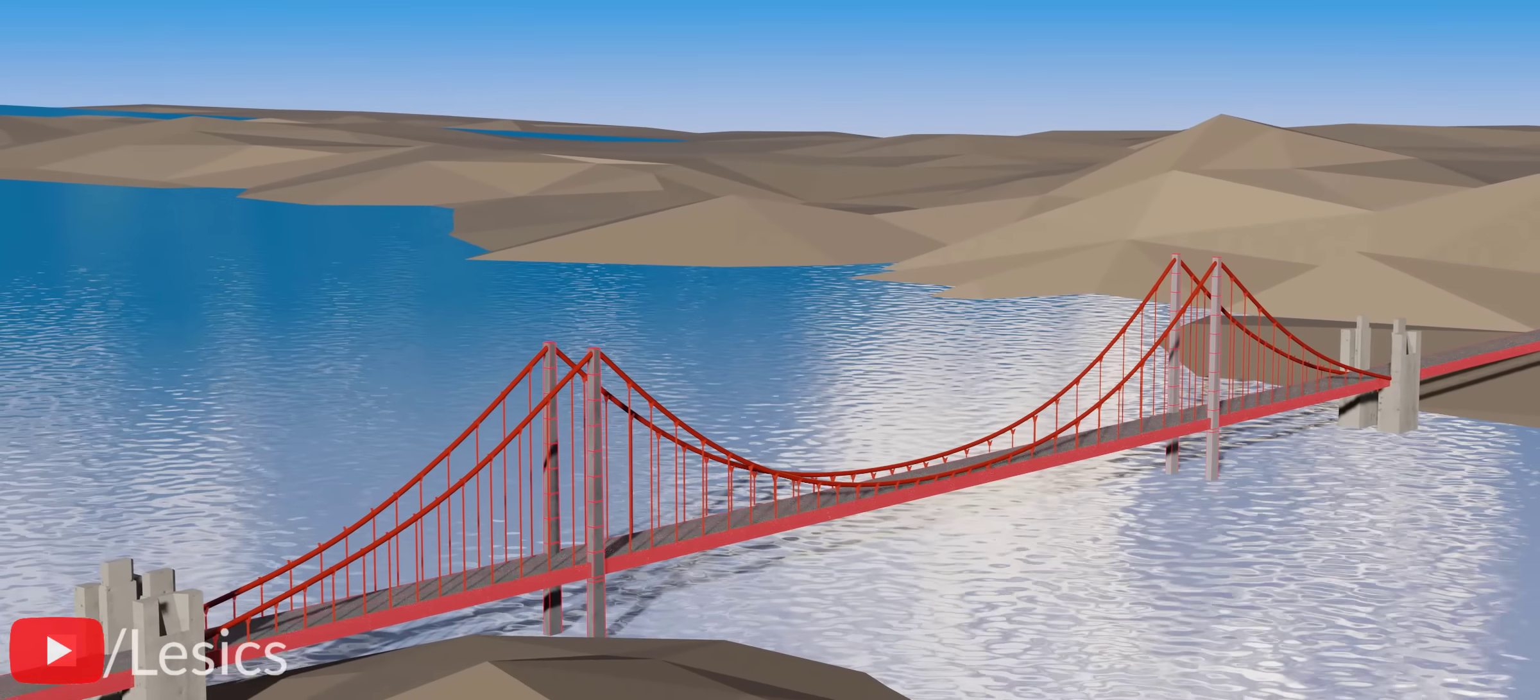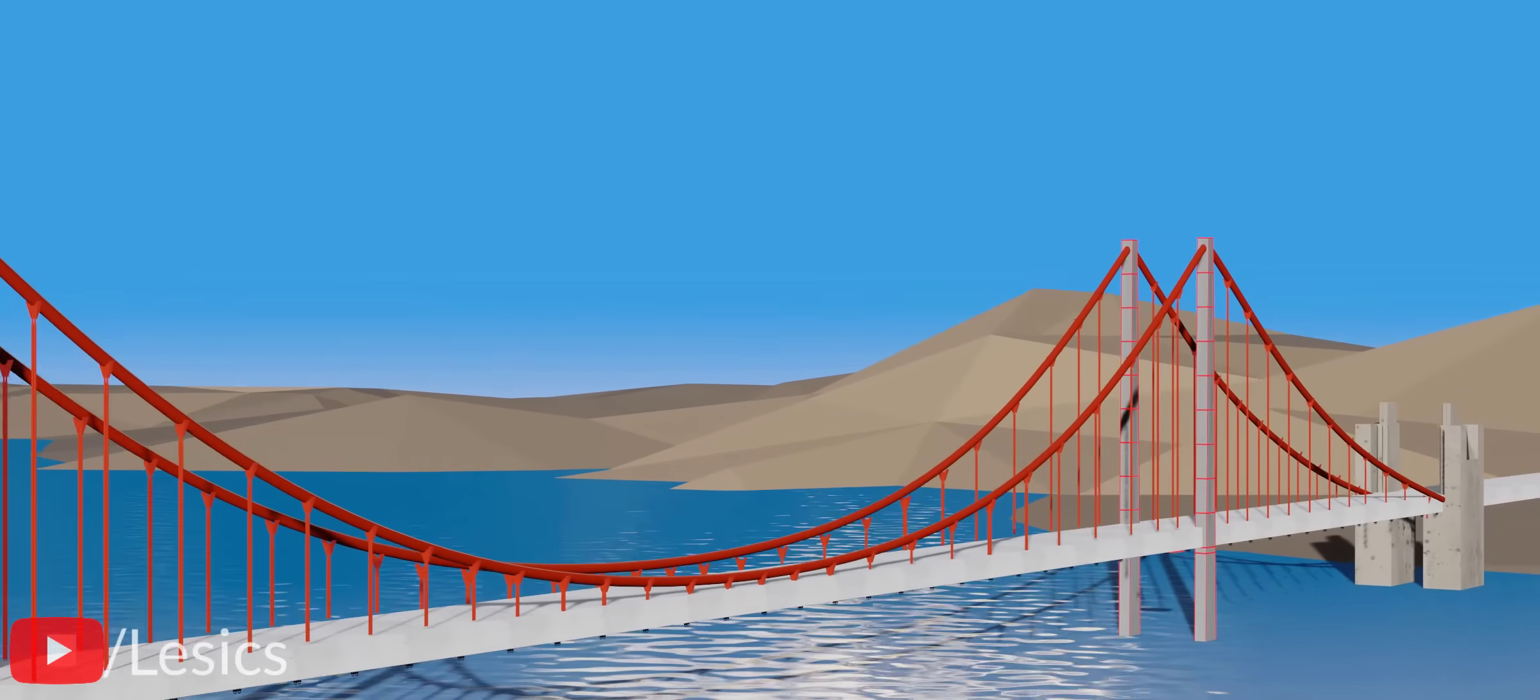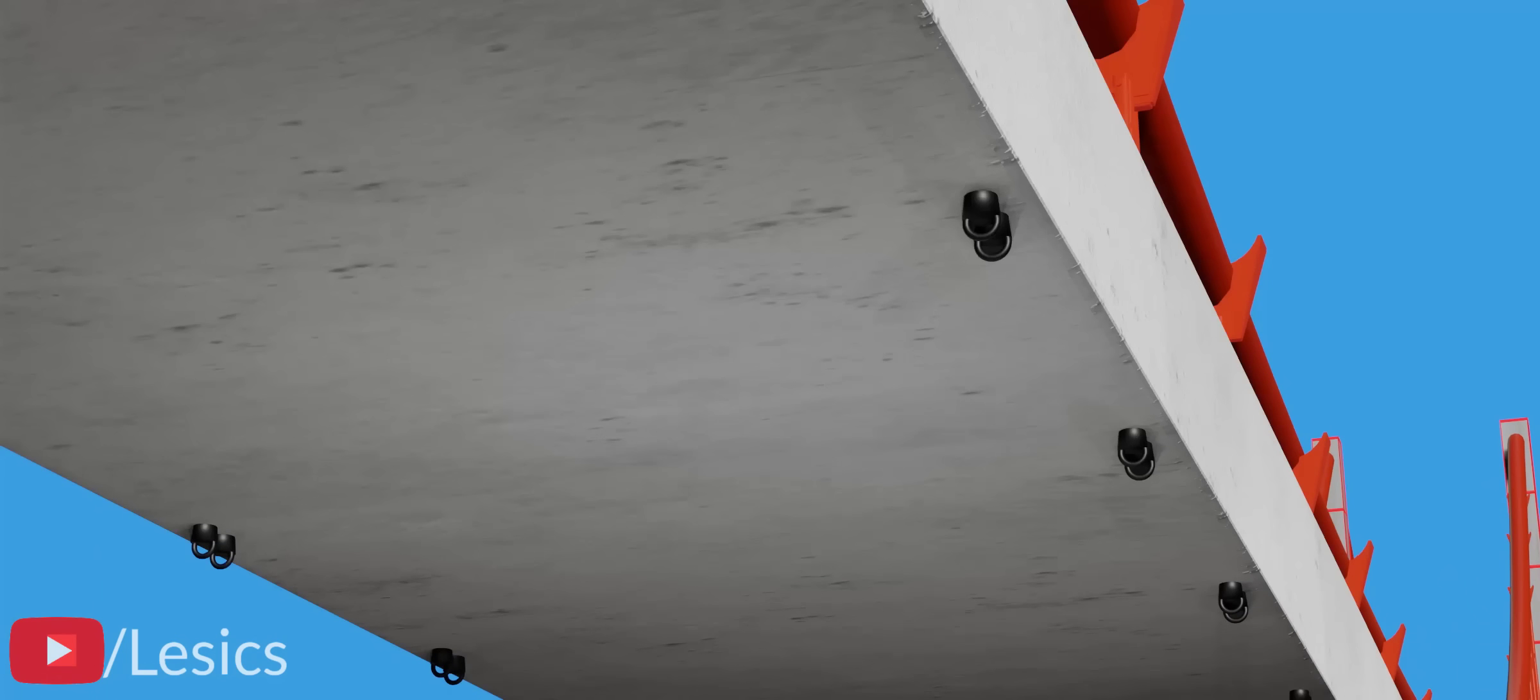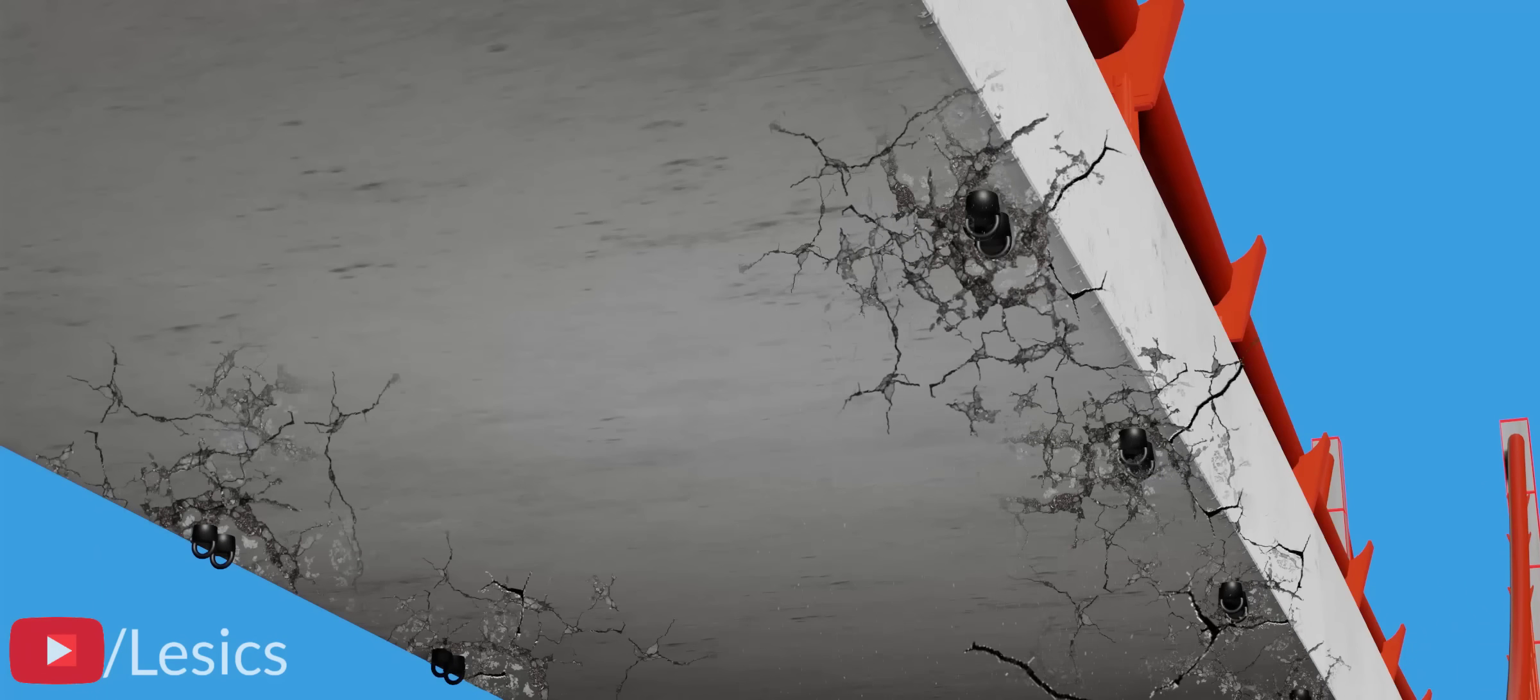Connections are the weakest part in any structural system. The direct connection of the steel suspenders with the concrete deck will lead to the formation of cracks on the deck since concrete is brittle in nature.